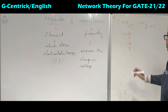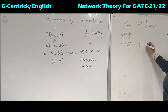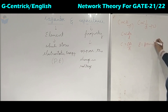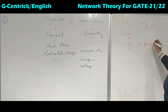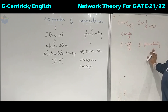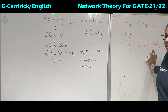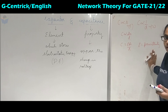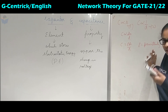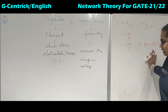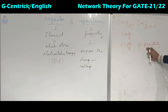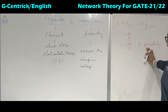When we remove the proportionality sign, we get a constant epsilon, giving C equals epsilon times A upon D. This epsilon is called permittivity. Whereas in an inductor there was the mu constant called permeability — the ability to allow magnetic flux lines — similarly epsilon is the ability to allow electrostatic field lines.